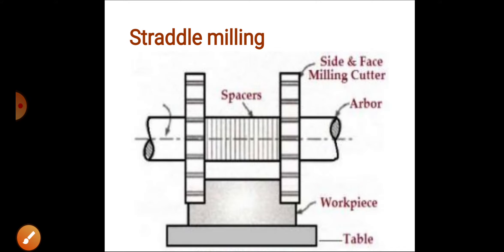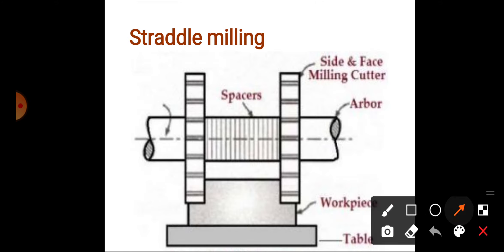Next is straddle milling. In straddle milling, two side milling cutters which are equally spaced form two parallel faces of a work piece. The work piece has two faces - first is this one, second is this one, and these two faces are parallel.